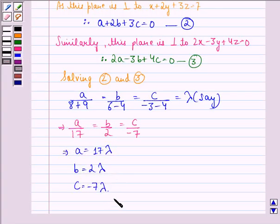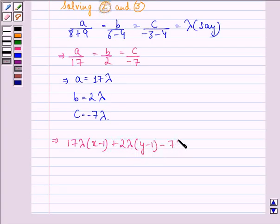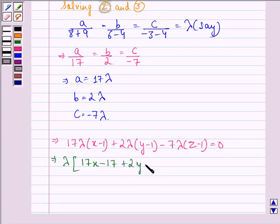Putting these values in the first equation, we get 17λ(x-1) + 2λ(y-1) - 7λ(z-1) = 0. This implies λ(17x - 17 + 2y - 2 - 7z + 7) = 0.